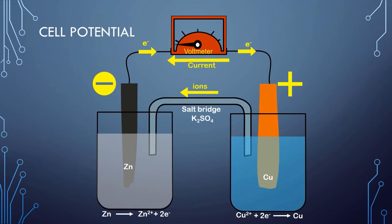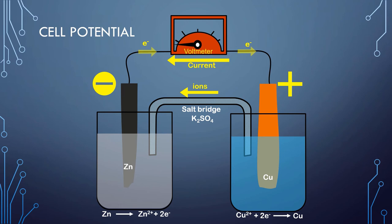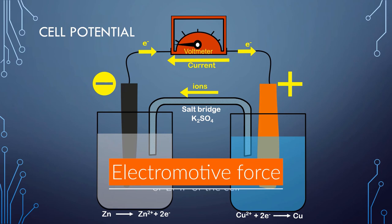Now let us understand the concept of cell potential or EMF of the cell. An electrochemical cell is made up of two electrodes or half cells. One of these electrodes must have a higher electrode potential — a higher tendency to lose electrons — than the other. As a result of this potential difference, electrons flow from the electrode at higher potential to the electrode at lower potential. The difference between the electrode potentials of the two half cells is known as the cell potential, called the electromotive force (EMF) of the cell, when no current is drawn from it.